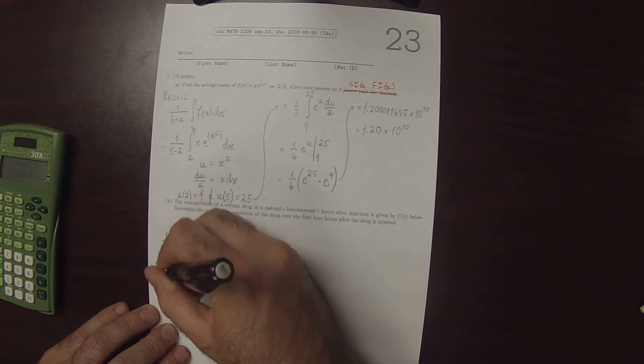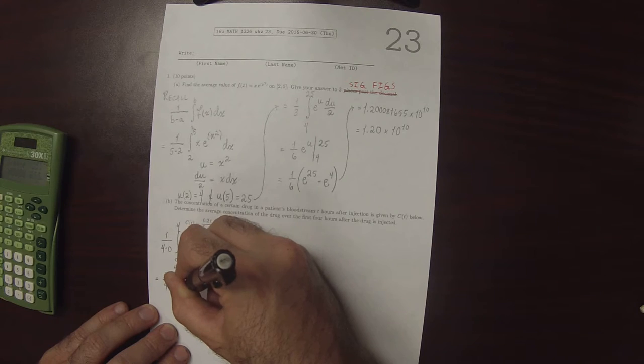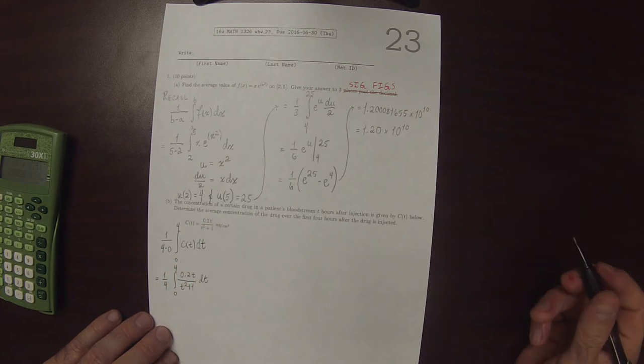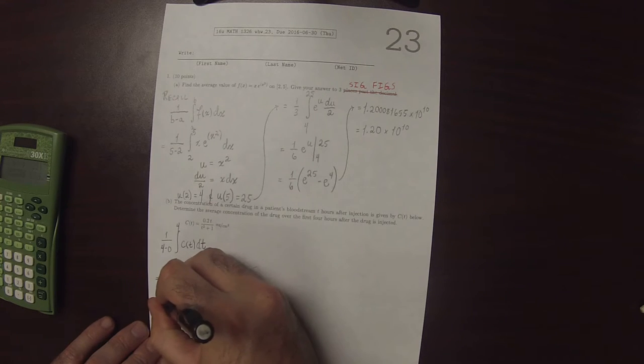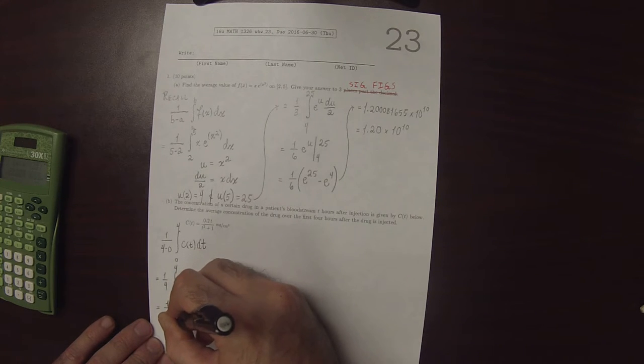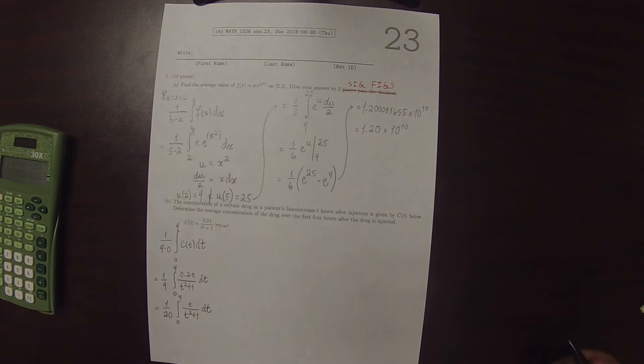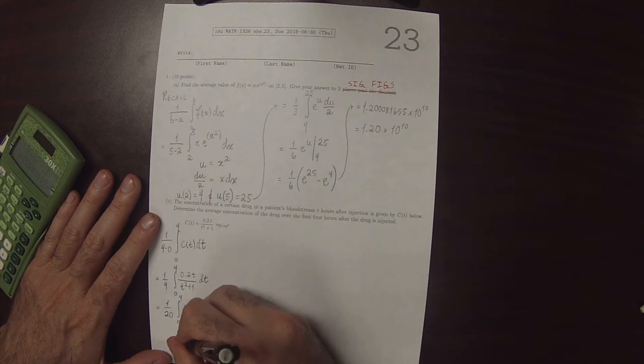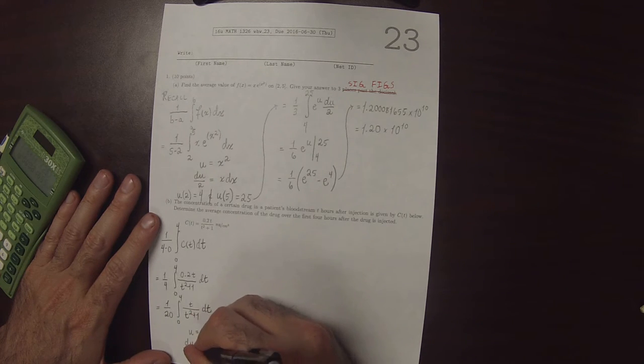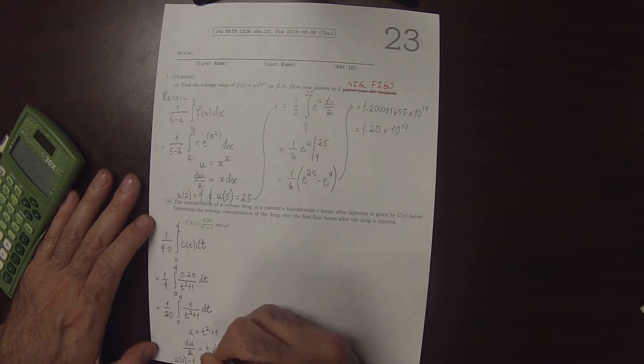So this is 1 fourth integral 0 to 4, and then 0.2 T over T squared plus 1 dT. The 0.2 is the same as 1 over 5, and that can come out making 1 over 20, integral 0 to 4, T divided by T squared plus 1 dT. And then we can perform the substitution u is T squared plus 1, dT divided by 2 is T dT. And then we can change the limits. U evaluated at 0 is 1, and u evaluated at 4 is 17.